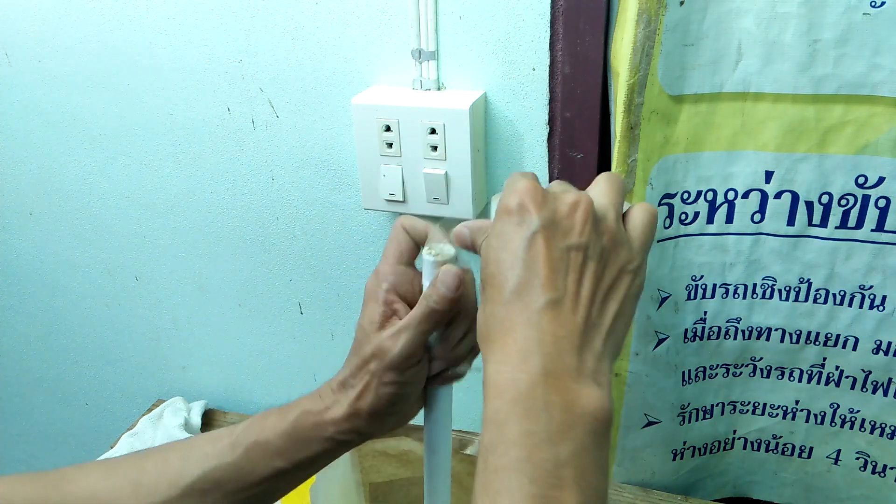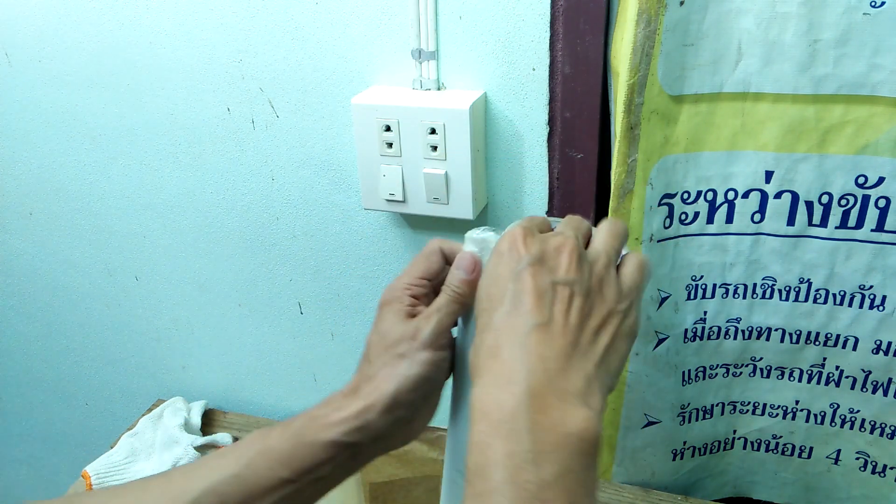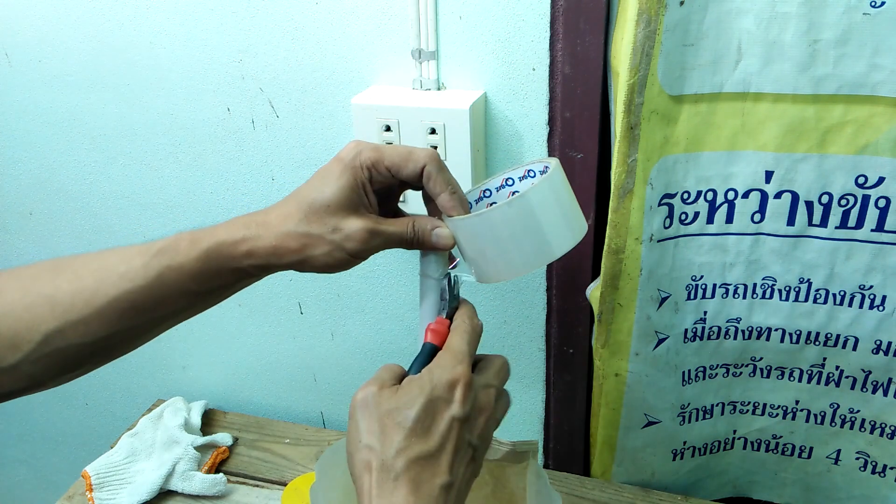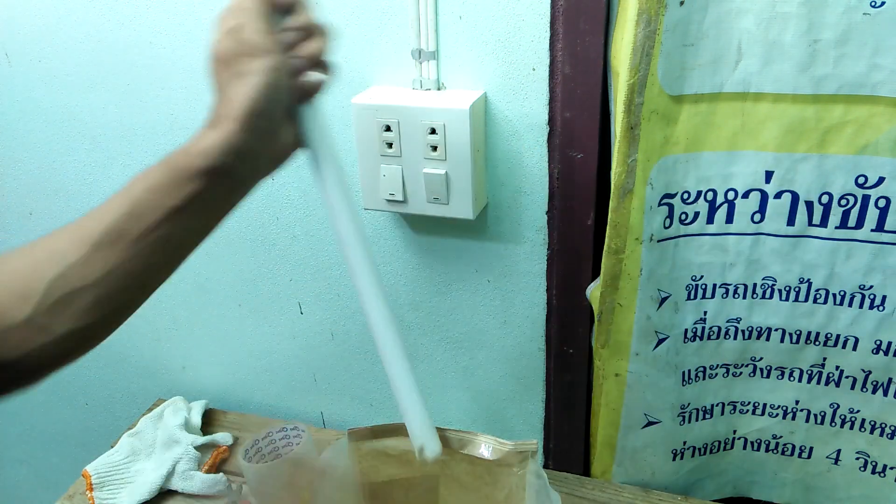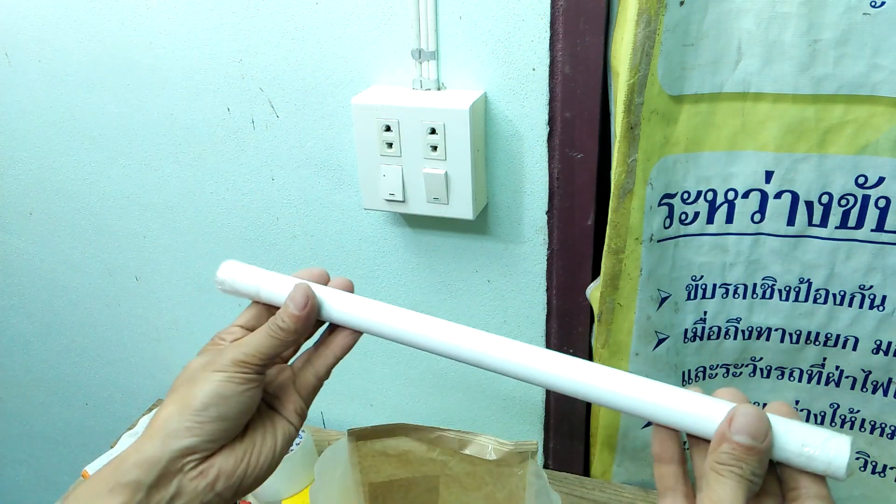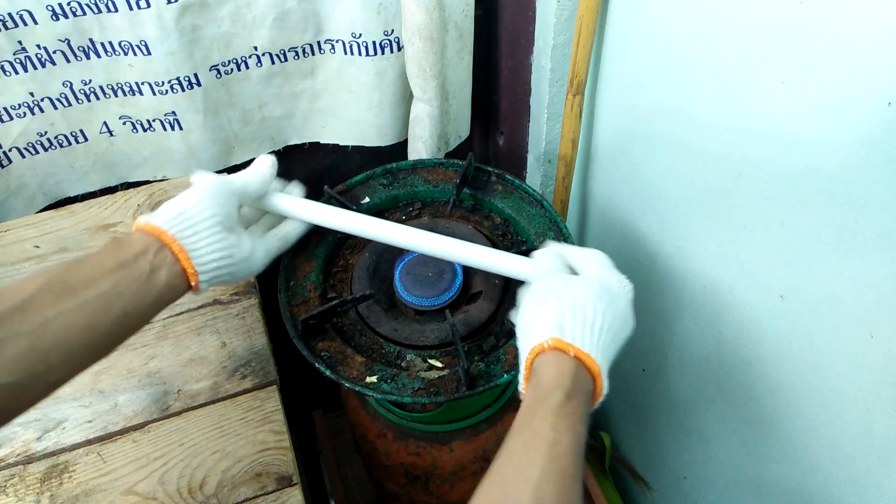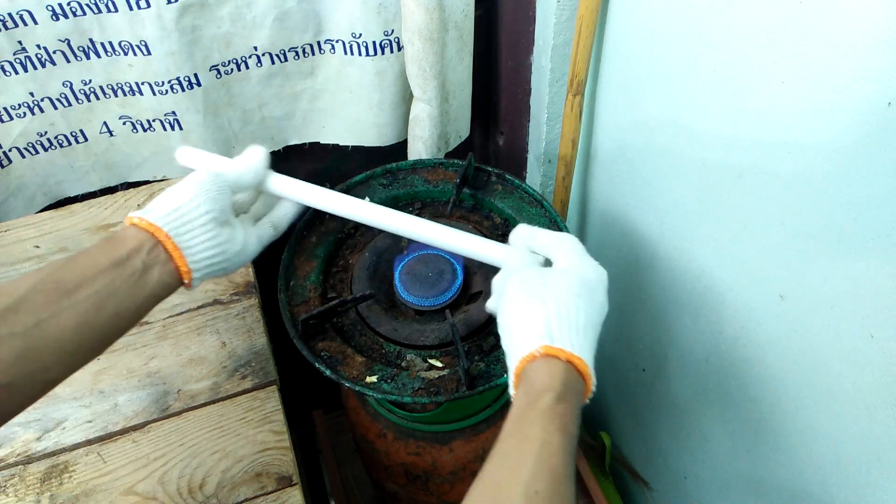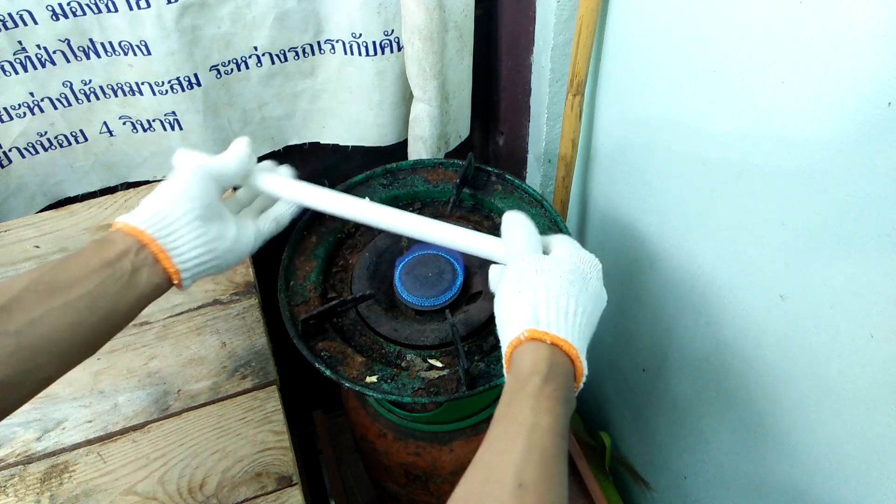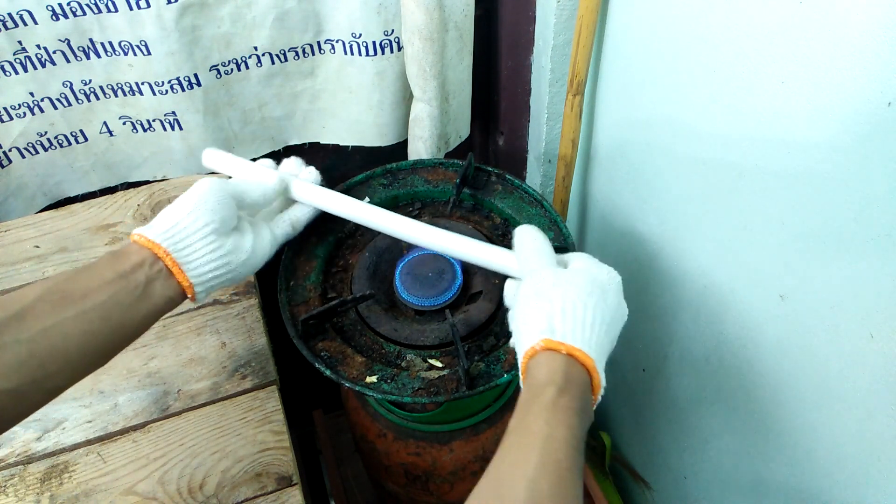I taped the ends of the pipe to keep the sand inside. Then I just heat it slowly in a stove. I rotate the pipe so that the spot to bend will be heated evenly.